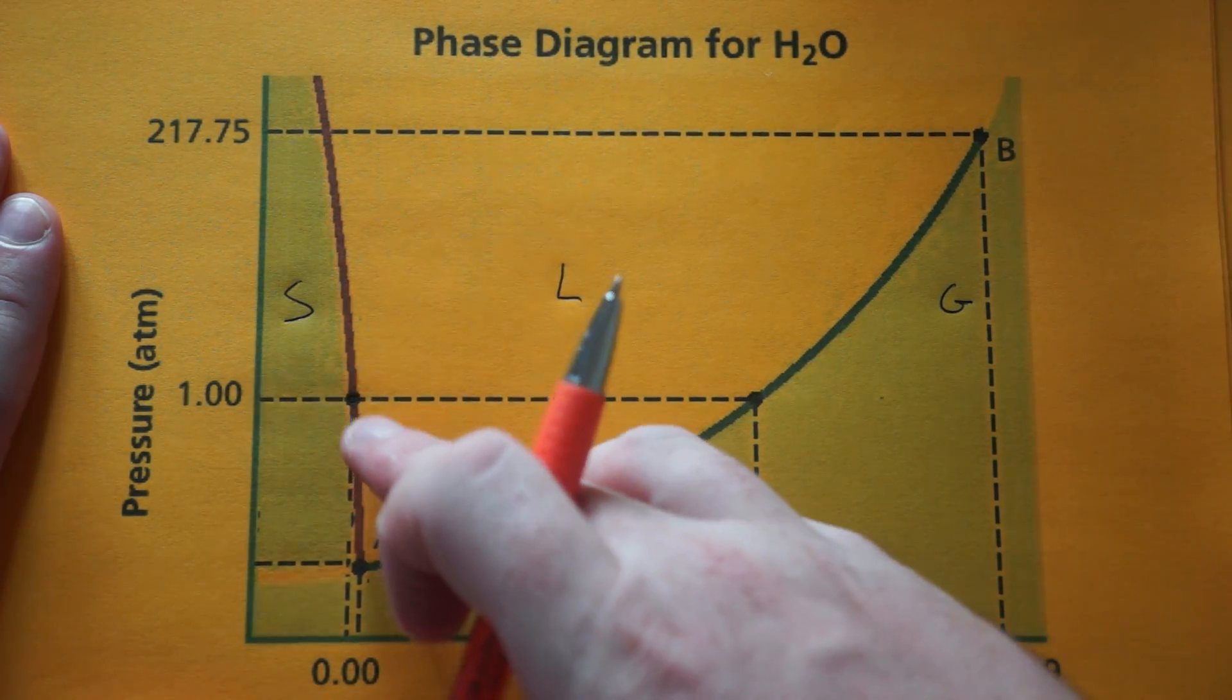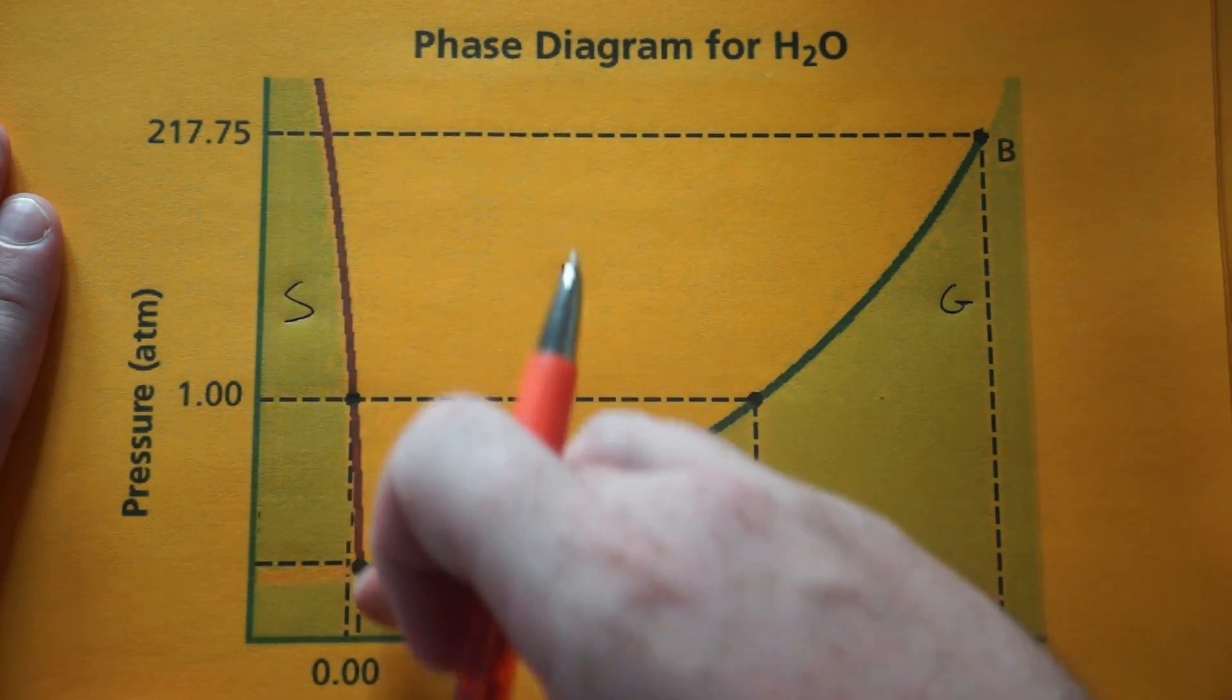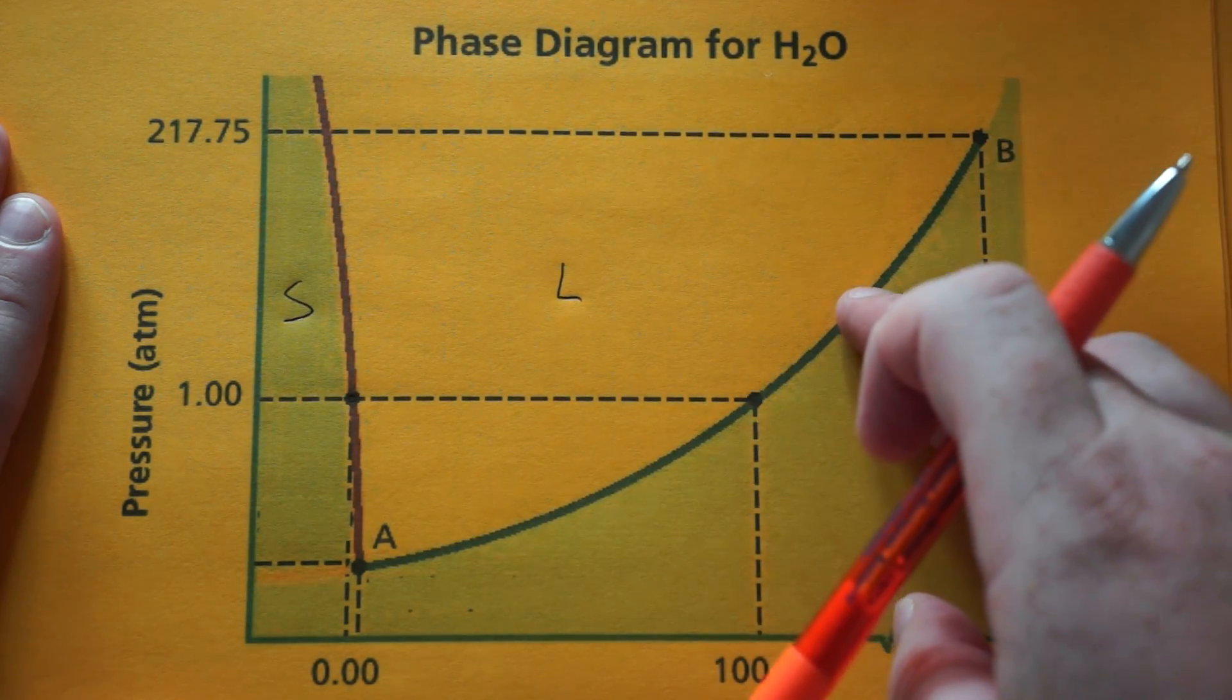If you raise the pressure, it's going to melt at a lower temperature and boil at a higher temperature.